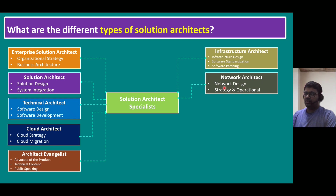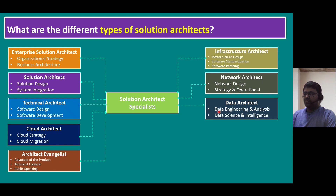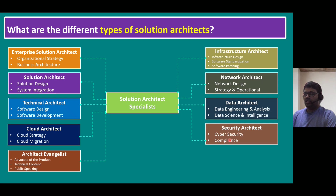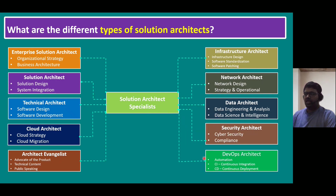Infrastructure architect focuses on infrastructure design and software standardization, including software patching. Network architect focuses on networking devices, including network design strategy and operations. Data architect focuses on data engineering, analysis, and data science intelligence. Security architect's main focus is cybersecurity and compliance. DevOps architect is also one of the most popular roles these days, focusing on automation including CI/CD pipelines — continuous integration and continuous deployment.